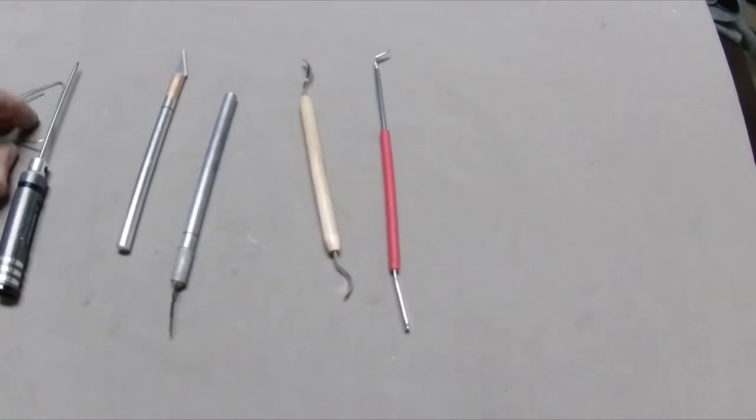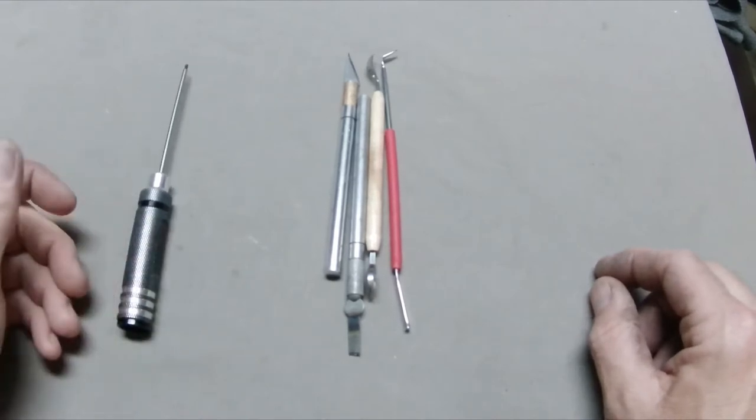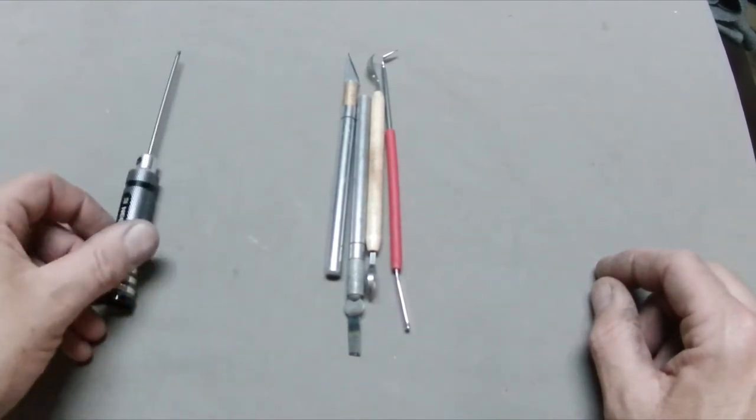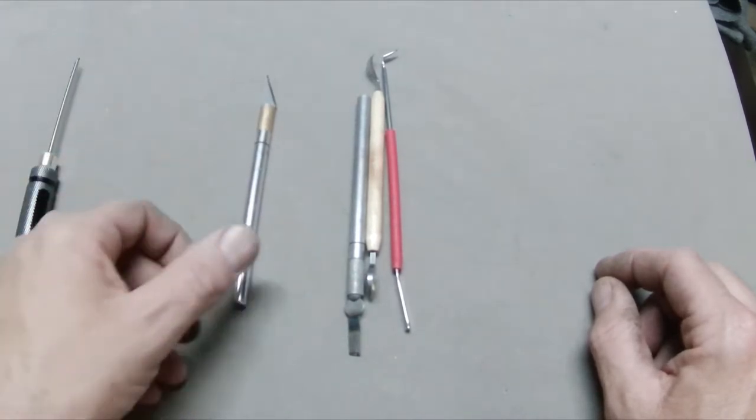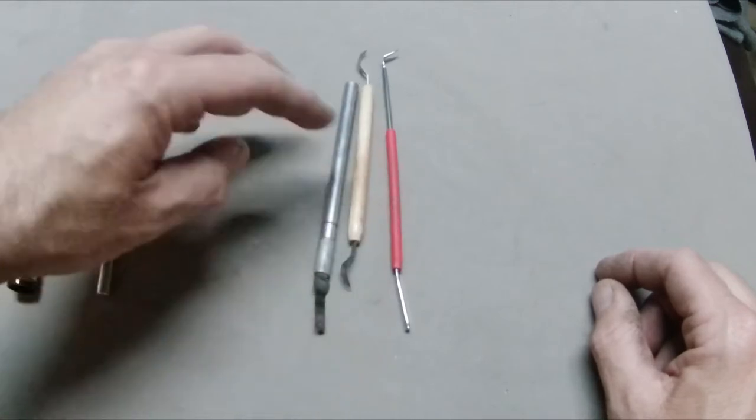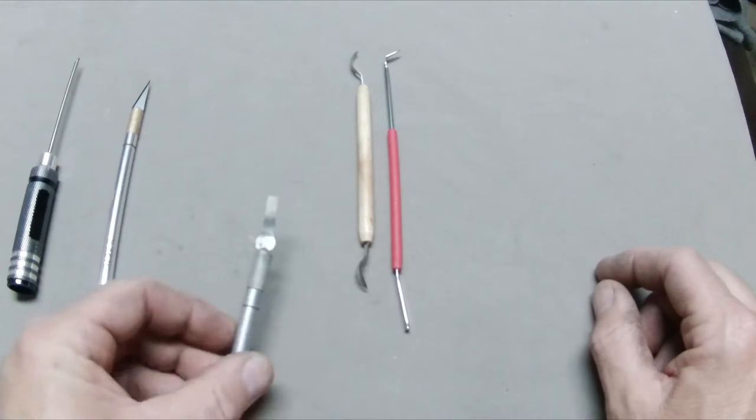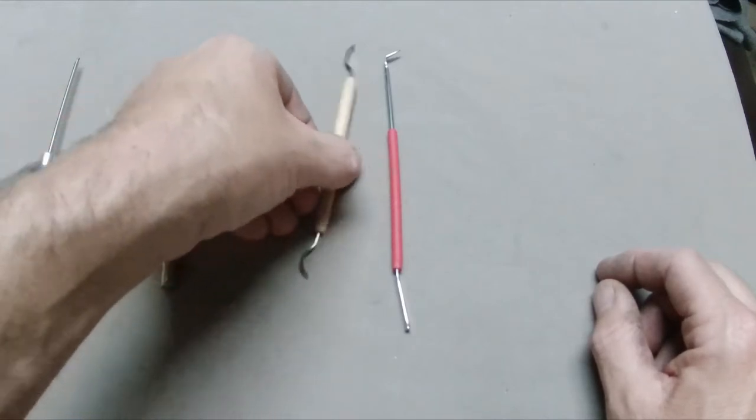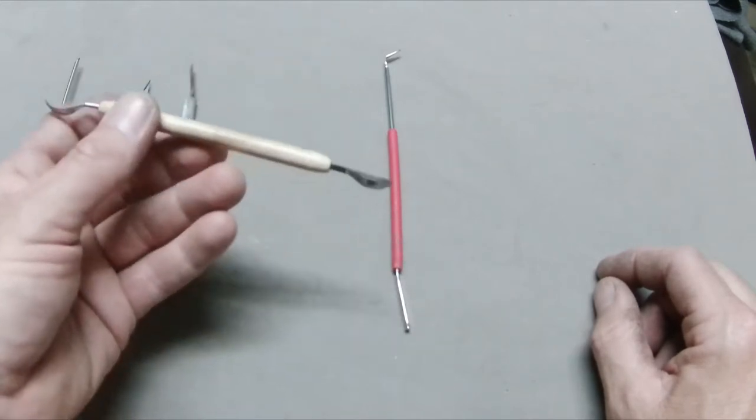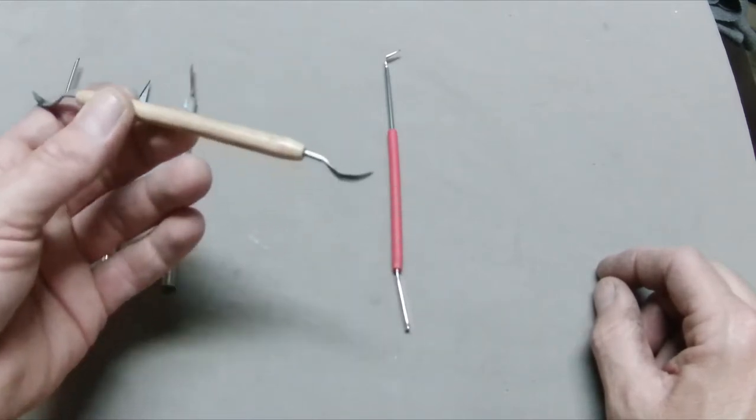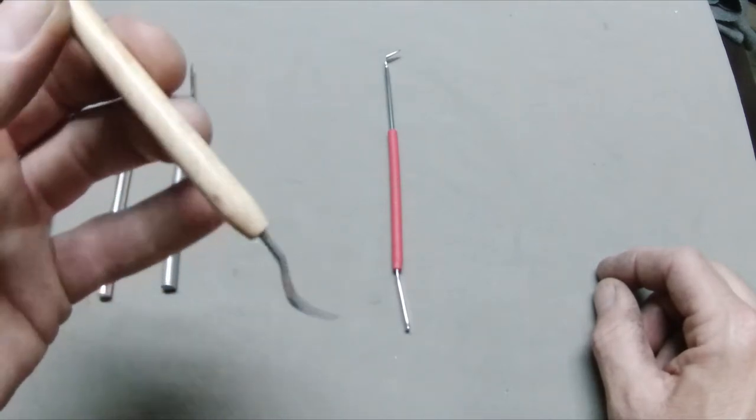All right. So, we'll talk about tools first. So, on the left, we have the Allen driver to take out the two millimeter Allen bolts. Your basic exacto knife, hobby knife, whatever. This is another style hobby knife. And I've just got the blade bent. It helps get underneath things.